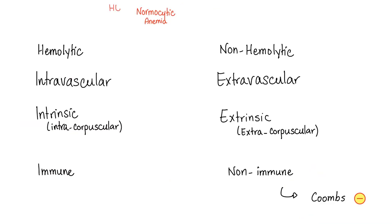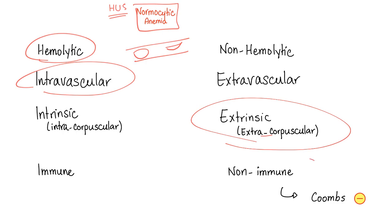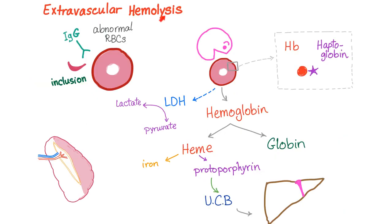Let's characterize the normocytic normochromic anemia in hemolytic uremic syndrome. Is it hemolytic? Yes. Is it intravascular or extravascular? It's intravascular — the red blood cells get sheared into schistocytes inside the blood vessel, not in the spleen. Is it intrinsic (intracorpuscular) or extrinsic (extracorpuscular)? The problem is outside the red blood cells, so it's extrinsic. Is it immune or non-immune? It's non-immune, so Coombs test will come back negative — there is no antigen-antibody reaction. Extravascular hemolysis is not involved in HUS.